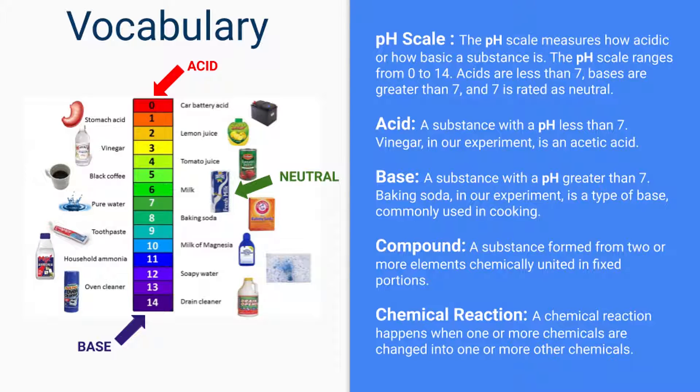So acids are a substance with a pH of less than seven. For our experiment today, we're going to be using vinegar, which is an acetic acid. Can you find what number it is on the pH scale?